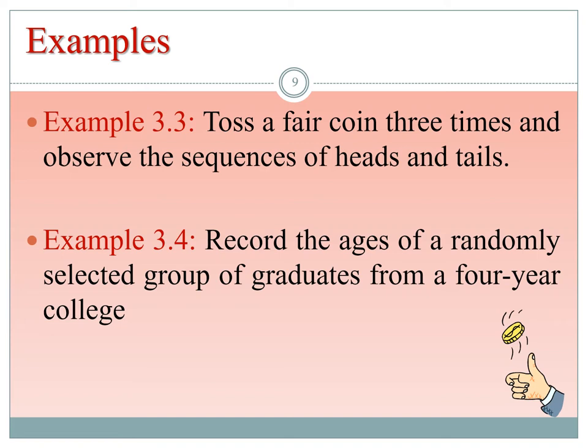Another example of an experiment is recording the ages of a randomly selected group of graduates from a four-year college. In this case, recording ages means recording possible numerical values.